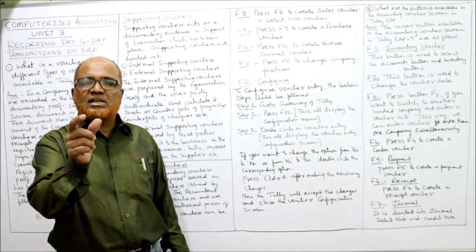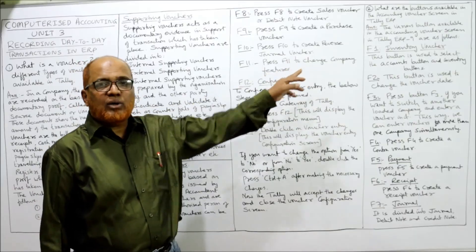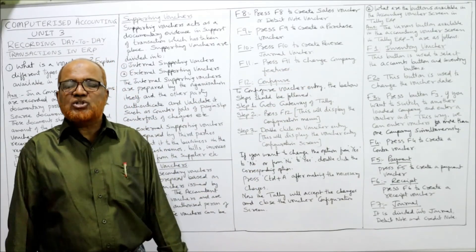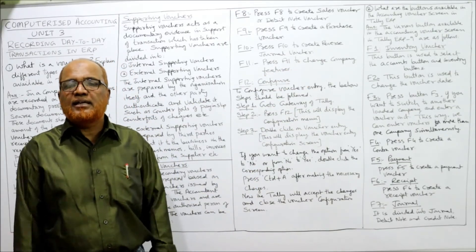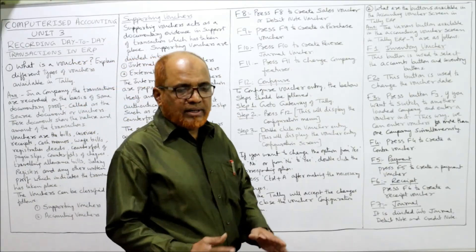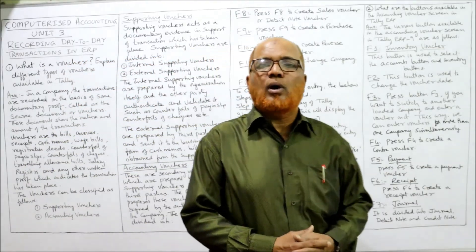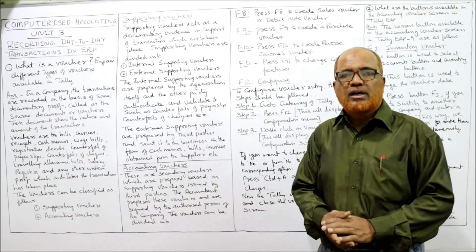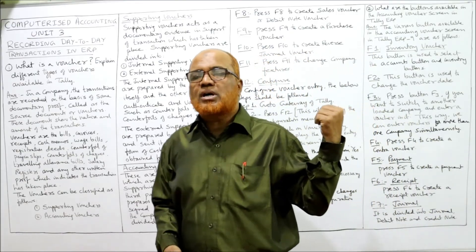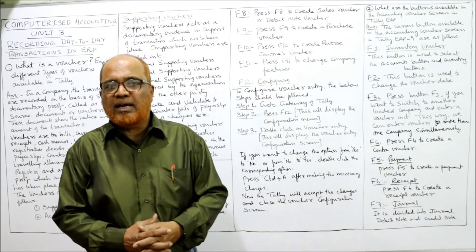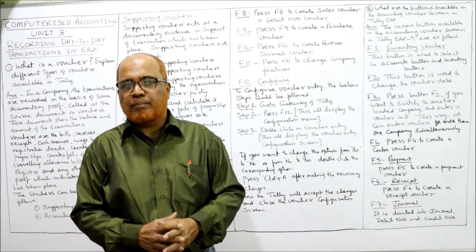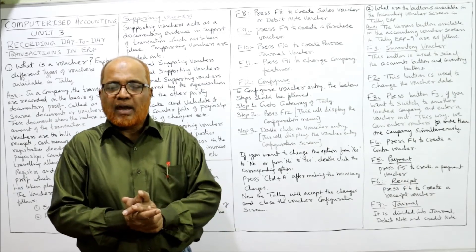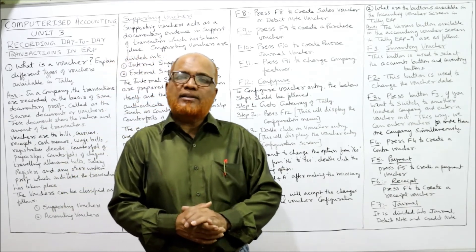These are the different function keys used in Tally ERP, from F1 to F12, each having a different function. In this video I have explained what a voucher is, the different types of vouchers, and the different buttons used in Tally ERP 9 from F1 to F12.